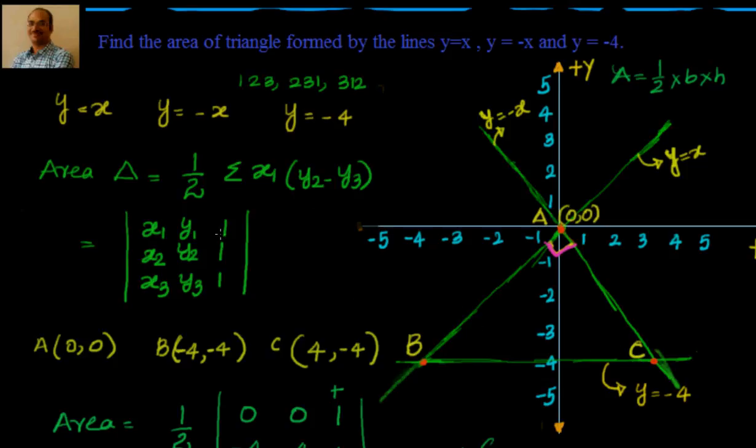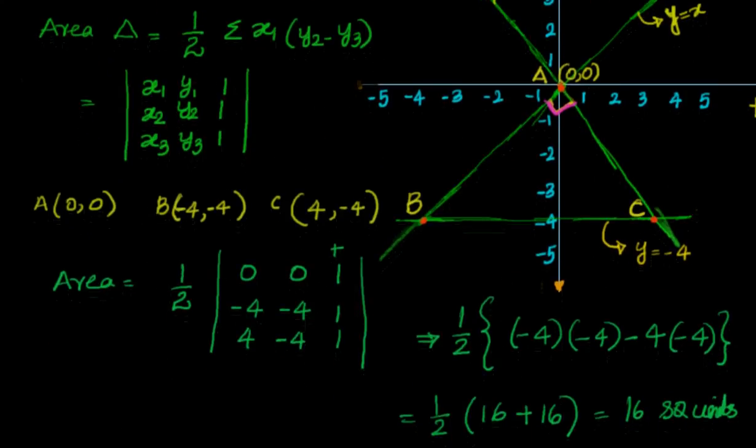Now once we got the vertices, we know how to find out the area of triangle. In this session, we are learning not only sigma x1 into y2 minus y3, we can also represent them in determinant form. Using determinant form, sometimes it is very easy to calculate the area.